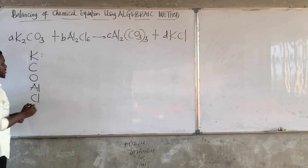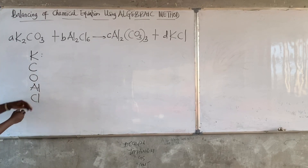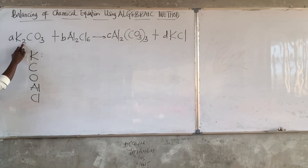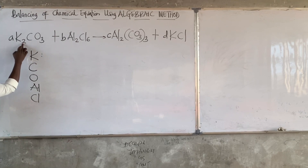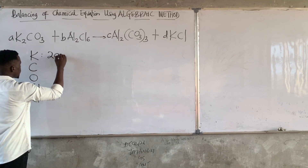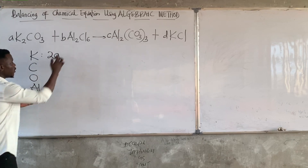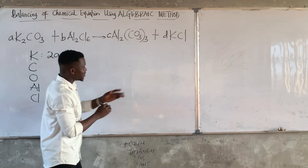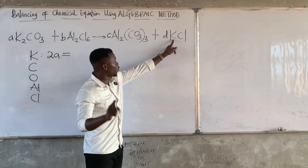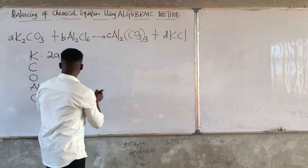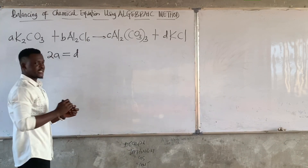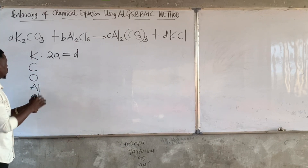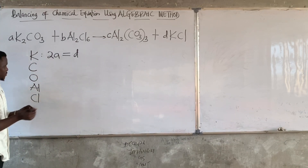Let's start with potassium. Look at the left-hand side — potassium is 2 here, so 2 times A is 2A. There is no potassium on this side. On the right-hand side there is potassium: 1 times D is D. So the equation for potassium is: 2A = D. I've succeeded in writing a balanced equation for the element potassium.